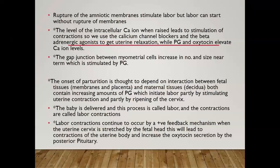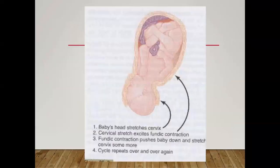Labor contractions are painful, frequent, increasing in frequency and intensity, and cause cervical dilatation. Contractions continue by a positive feedback mechanism when the uterine cervix is stretched by the fetal head, leading to more uterine contraction and increased endogenous oxytocin release from the posterior pituitary. The baby's head stretches the cervix, causing more fundal contraction, which pushes the baby down again, and this cycle continues until complete expulsion of the fetus.